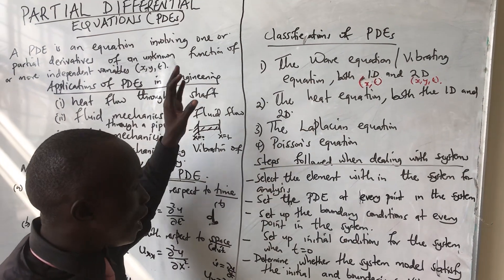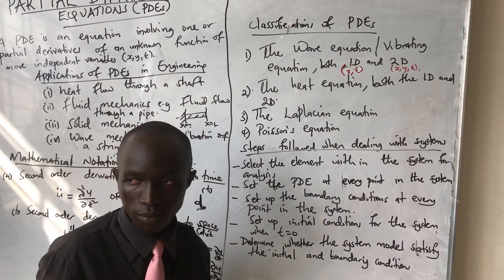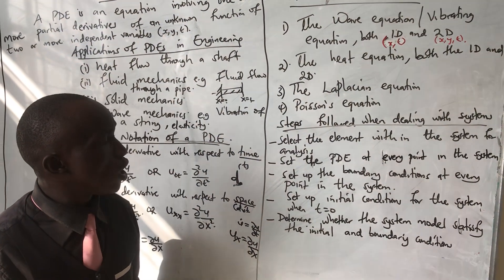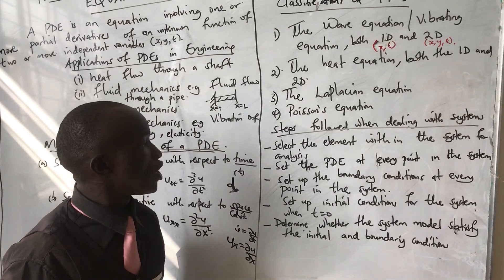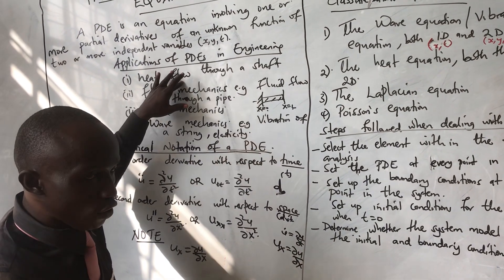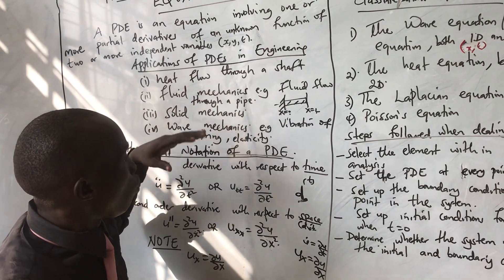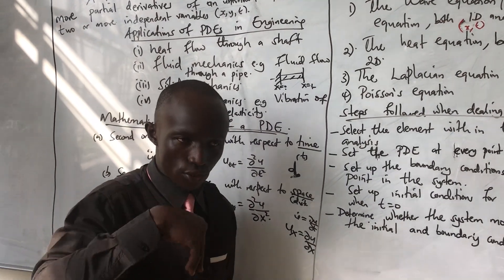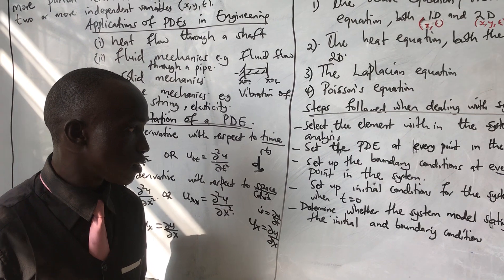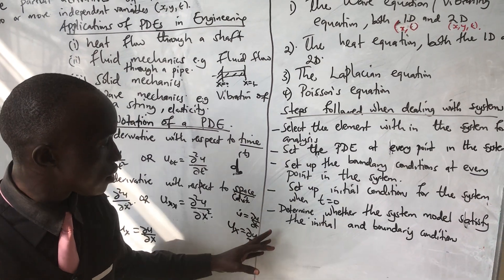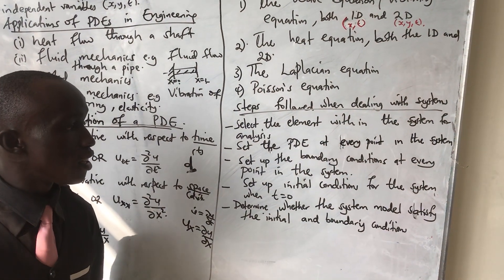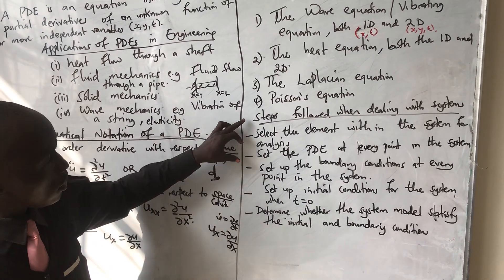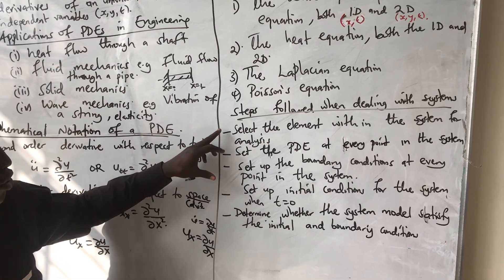What steps do you follow when dealing with systems? We are going to model systems, solve them, and analyze them. We shall analyze each equation — how heat flows through a shaft, how fluids flow through pipes, and the vibration of a string. We analyze these using five simple steps. Before we go to the next video, I want us to first know how to analyze using these five steps.